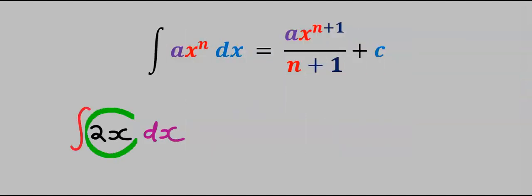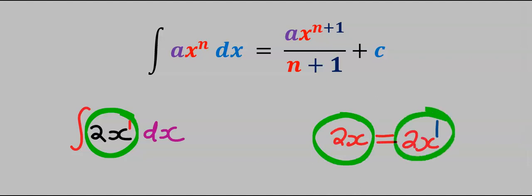Next, in this function, the power of this x has a 1, because 2x is the same thing as 2x to the power of 1.